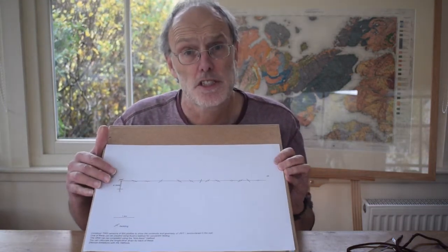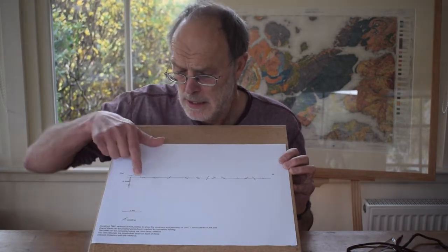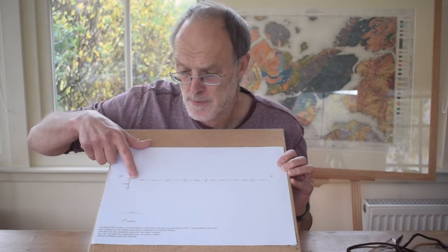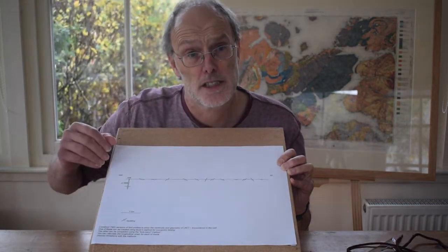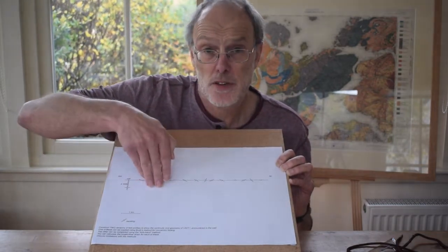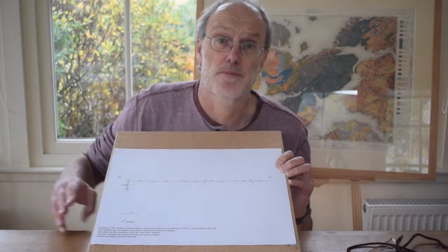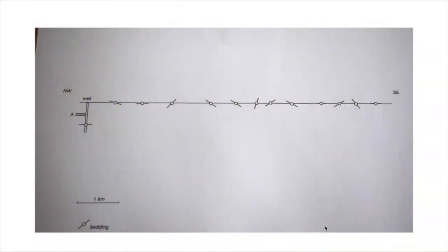Structural interpretation is about making choices, and we can explore this idea by drawing a cross-section using this exercise, which has a well and bedding data collected along an outcrop surface. We're going to compare two ways of constructing a cross-section, starting with the busk method, which interprets folds as being a series of continuously arcuate surfaces.